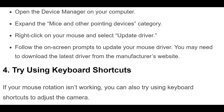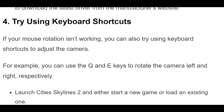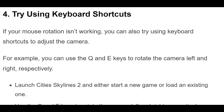4. If your mouse rotation isn't working, you can also try using keyboard shortcuts to adjust the camera. For example, you can use the Q and E keys to rotate the camera left and right, respectively. You can also use the A and D keys to pan the camera left and right, and the W and S keys to zoom in and out.